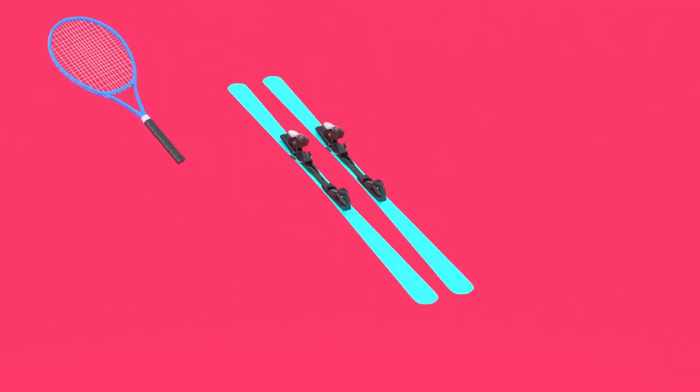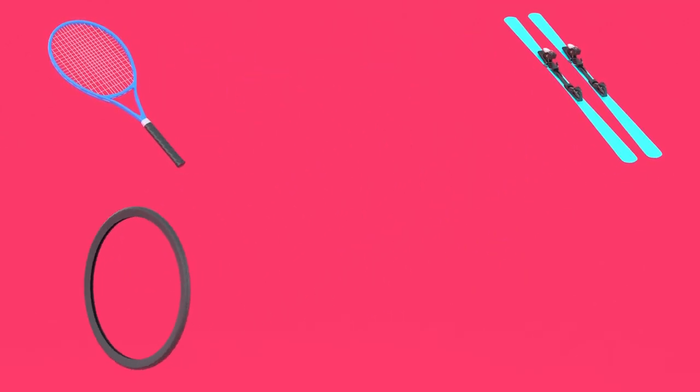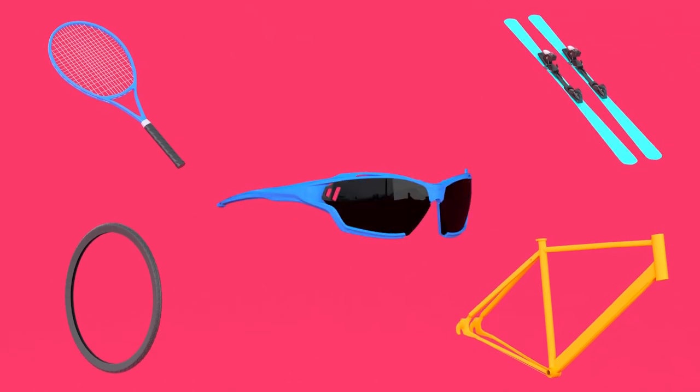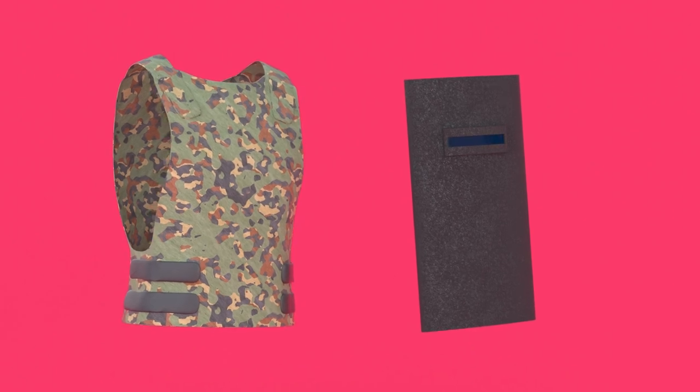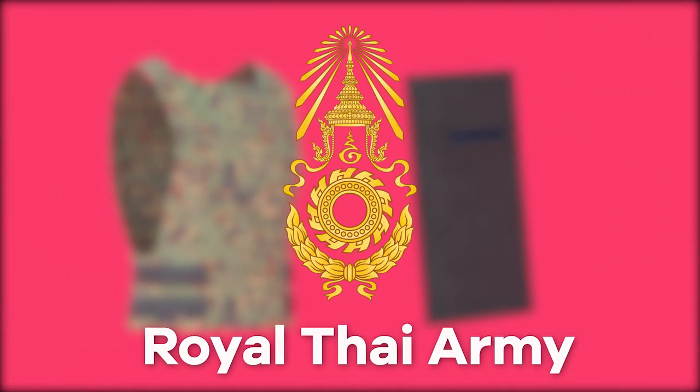Tennis rackets, skis, bicycle wheels and frames and sports glasses have been enhanced with graphene and are available on the market. Graphene enhanced bulletproof vests and ballistic plates are also being manufactured for the Royal Thai Army.